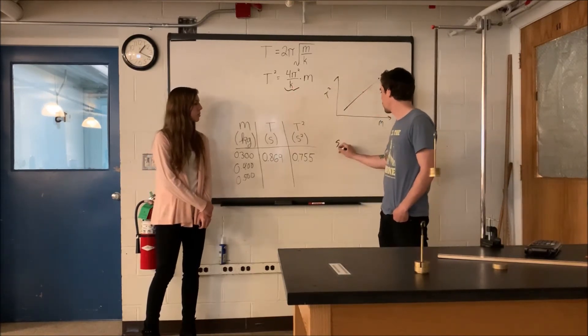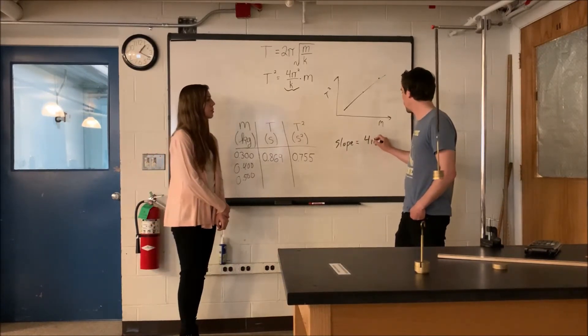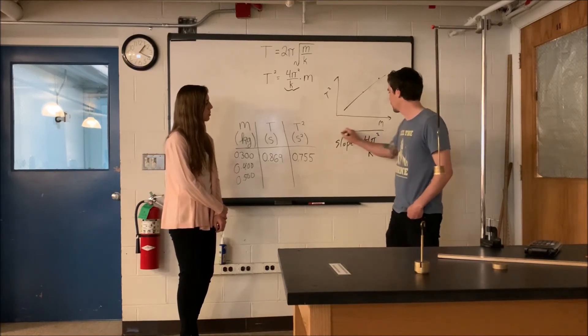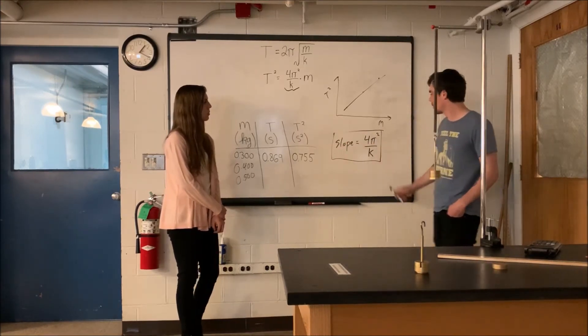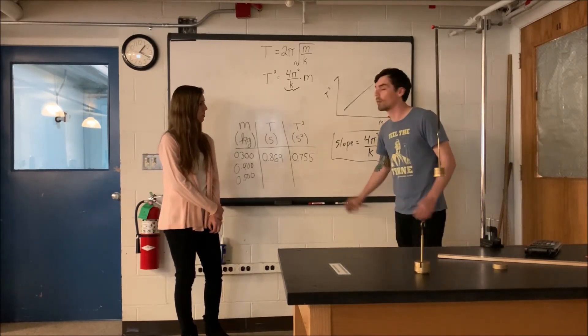The slope of this line that we just graphed will be 4π² divided by k. So you're going to use this to give us k. And now we have k measured in a different way.